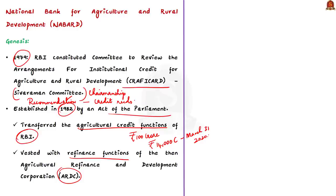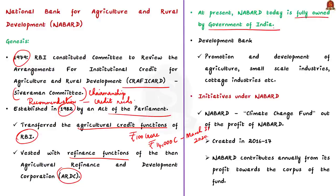Initially NABARD was not fully government-owned, but after revision in share capital composition between the Government of India and the Reserve Bank of India, NABARD today is fully owned by the Government of India. NABARD is a development bank with specific functions to bring about perceptible development to certain sections of society. It is mandated for providing and regulating credit and other facilities for promotion and development of agriculture, small-scale industries, cottage and handicrafts, and other rural crafts and economic activities in rural areas.